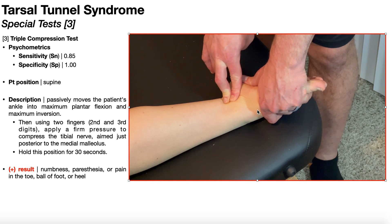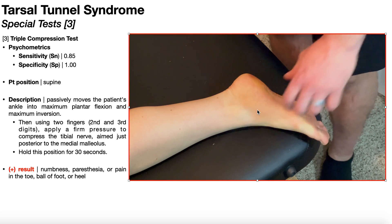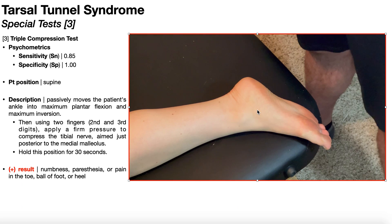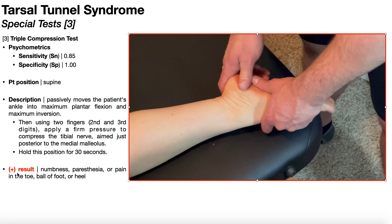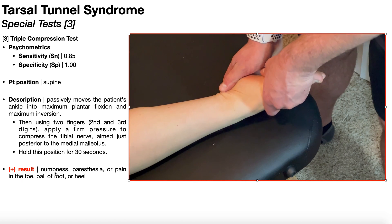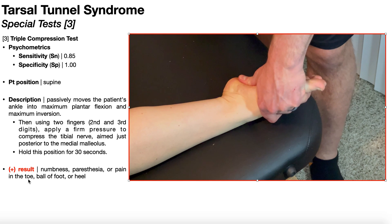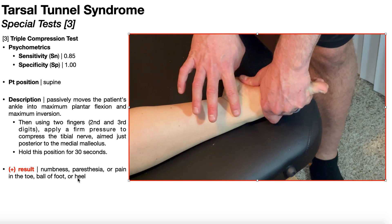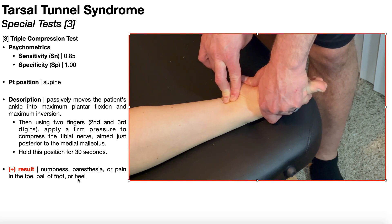Hold this position for 30 seconds. All of these movements are going to compress the tibial nerve. When you compress the nerve, a positive result would be numbness, paresthesia, or pain in the toes, ball of the foot, or the heel — basically distal numbness, distal paresthesias, or distal pain.